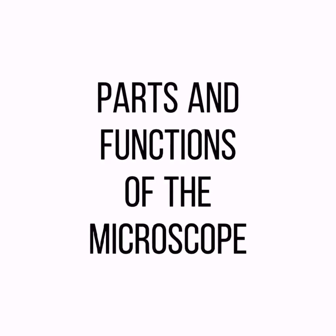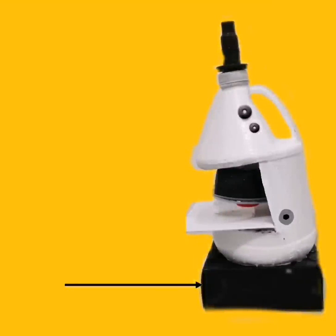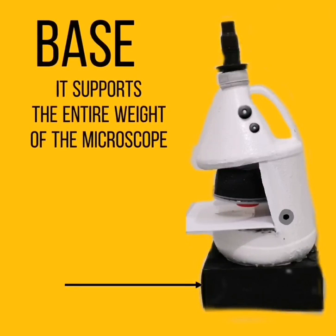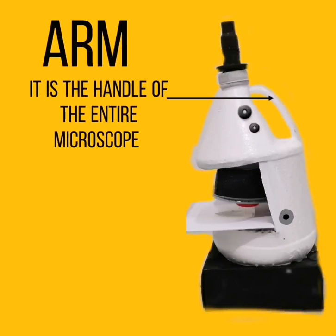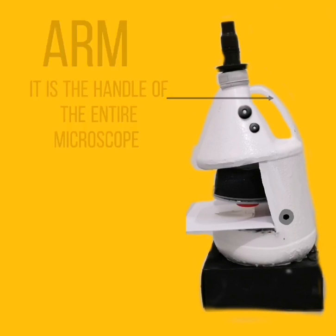Parts and Functions of the Microscope. Let's start with the base. The base supports the entire weight of the microscope. Up next is the arm — it is the handle of the entire microscope.